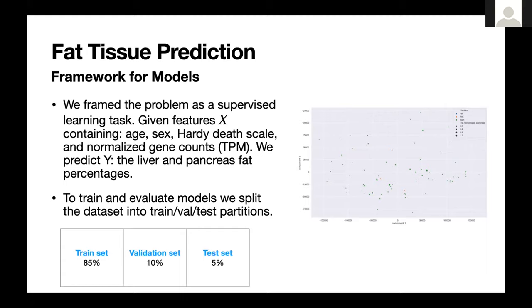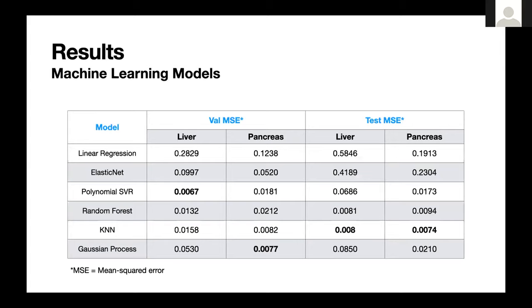To train and evaluate the models we split the dataset into train, validation, and test partitions: 85% train, 10% validation, and 5% test, with a total of 93 patients with gene samples. We used stratified sampling to distribute minority classes correctly for the validation and test sets. For the gene counts, we also removed several duplicates and standardized all the features.